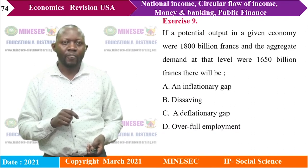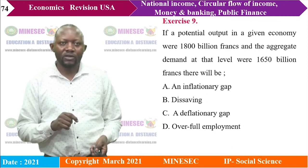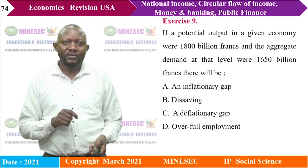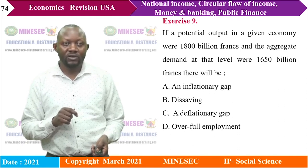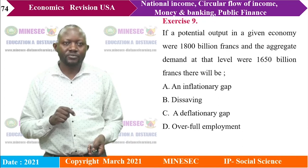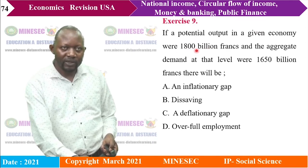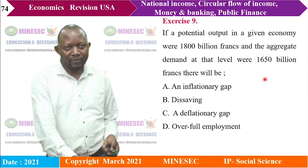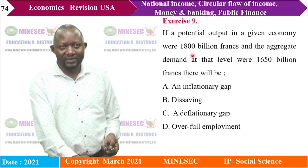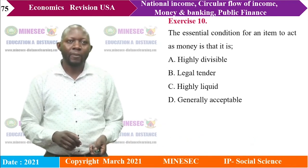Exercise 9: If potential output is 1,800 billion francs and aggregate demand at that level is 1,650 billion francs, there will be: A) inflationary gap, B) saving, C) deflationary gap, D) over full employment. Since aggregate demand (1,650) is less than potential output (1,800), aggregate demand is insufficient — this creates a deflationary gap. The right answer is C.